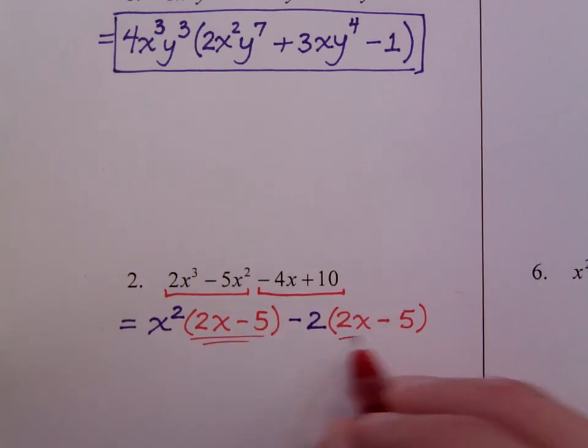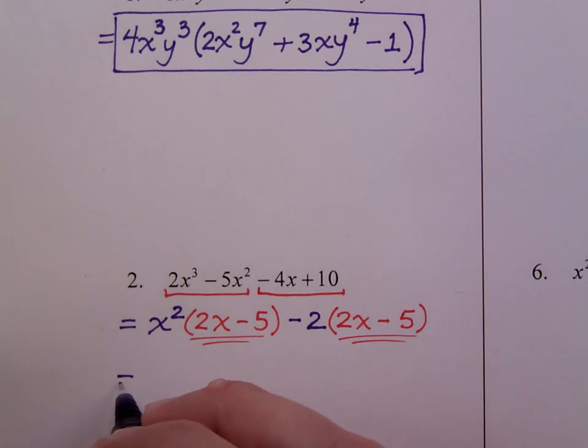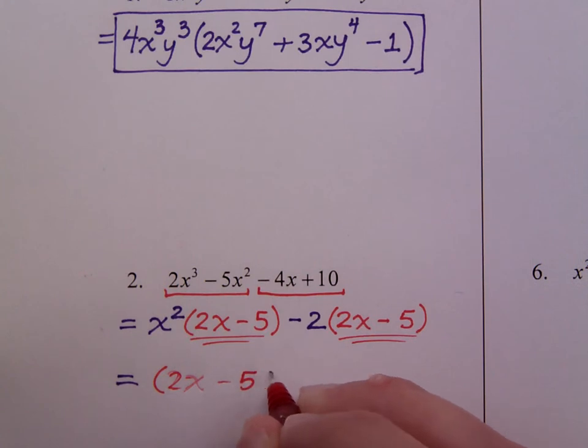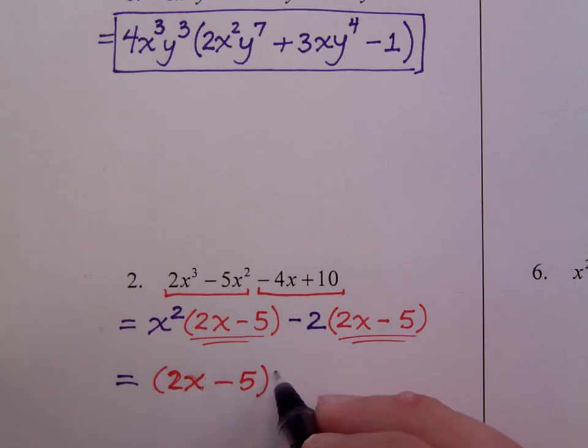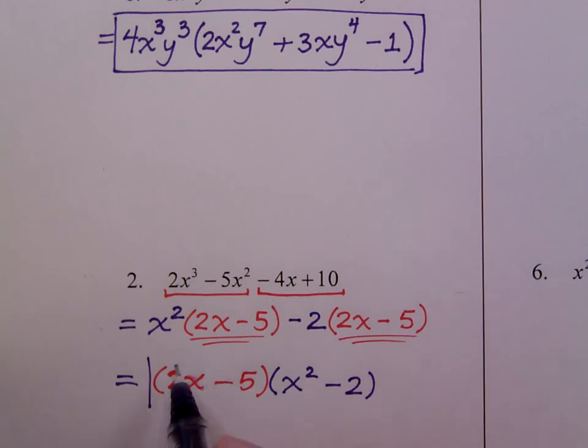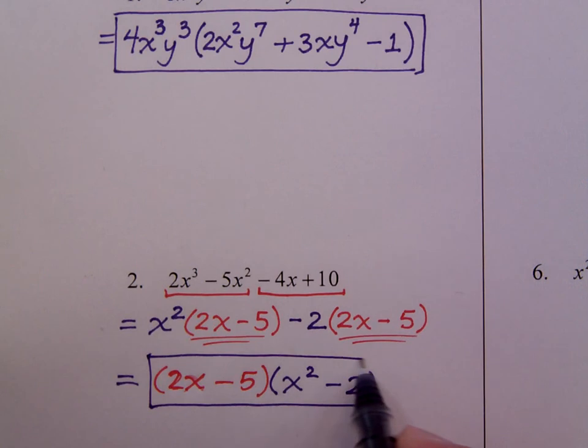And then what you see here is that there's a common factor in these larger groups. So 2x minus 5 is the common factor. And it was the common factor to both x squared and minus 2. Now, I guess before I box this, you want to make sure that you have factored everything completely. There's nothing else to do here. This is a linear factor. There's nothing to do here. If you remember the difference of squares, this is a square, this is a difference, but 2 is not a perfect square. So in terms of factoring using integers, we'd be done here.